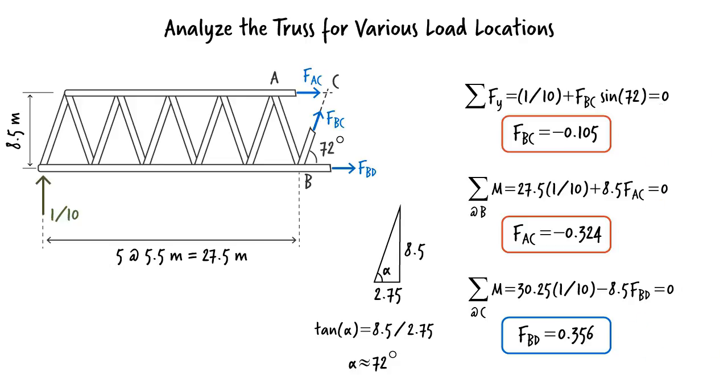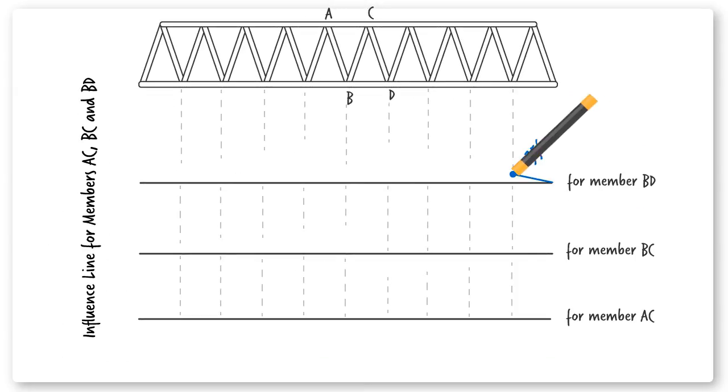Let's start graphing the three influence lines. Since BD is in tension, the value is plotted above the x-axis. In the case of BC and AC, the values appear below the x-axis since both members are in compression.